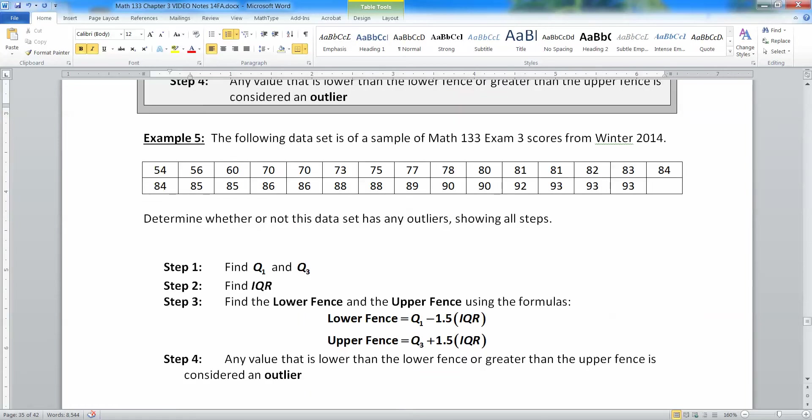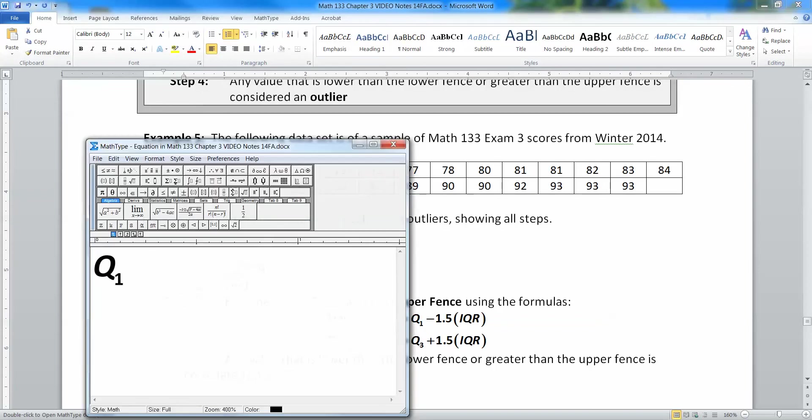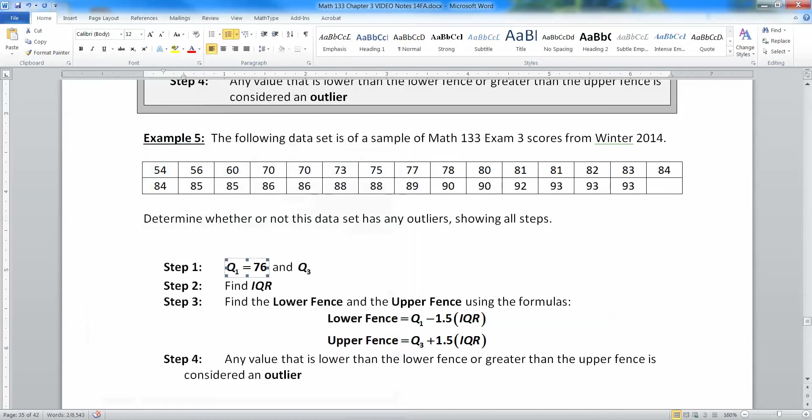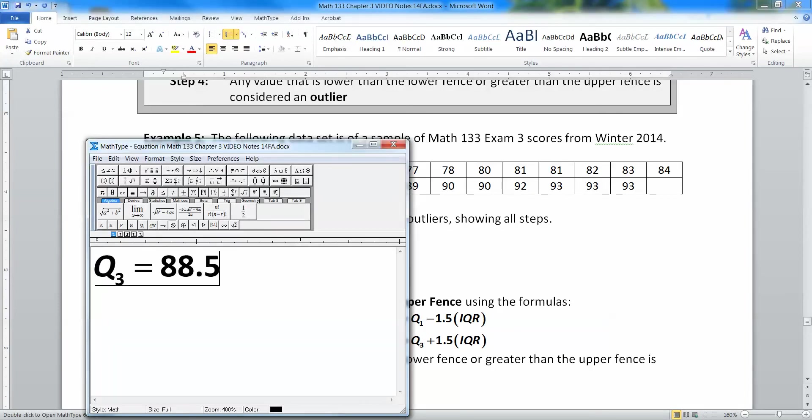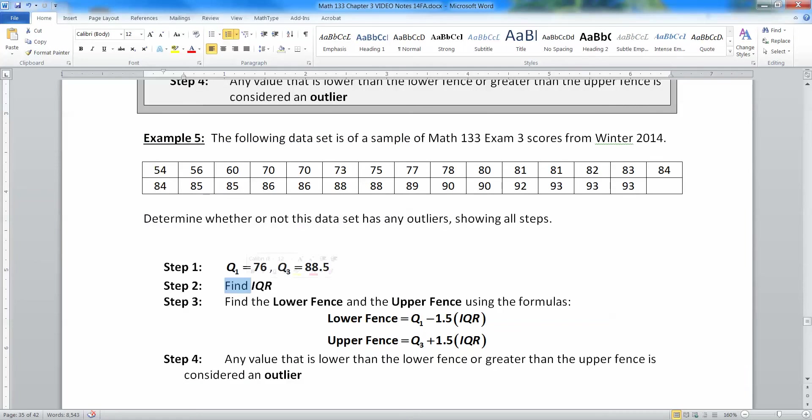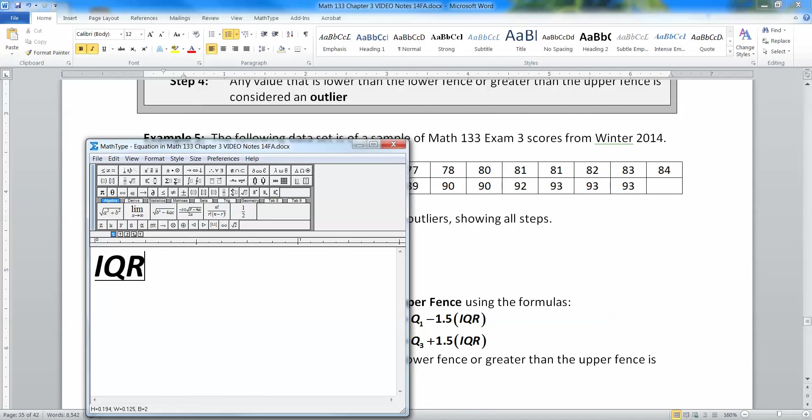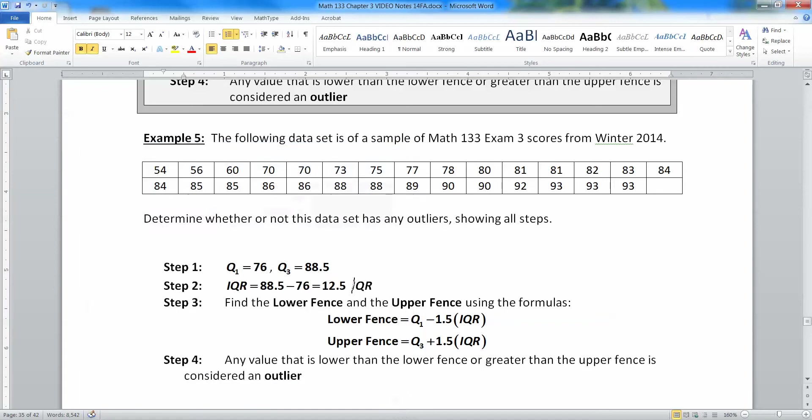All right, so let's look at the same data set we've been looking at. We've already found Q1. Q1 was 76. Q3 was 88.5. Then we've already found the IQR. IQR is 88.5 take away 76, which is 12.5. Done with that step.